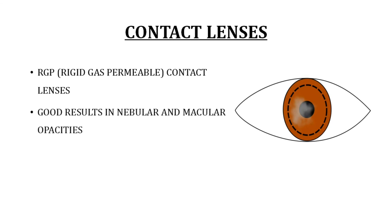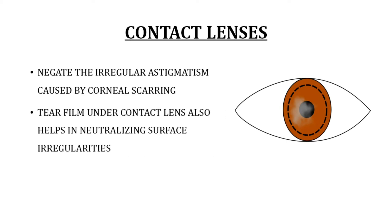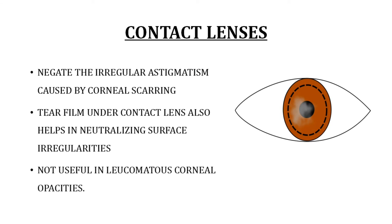A non-surgical optical management option for corneal opacities is to use contact lenses. The most commonly used are RGP — rigid gas permeable — contact lenses, which have shown good visual results in nebular and macular corneal opacities. Contact lenses replace the optically irregular surface of the scarred cornea, negating the irregular astigmatism caused by corneal scarring. The tear film under the contact lens also helps neutralize surface irregularities. However, RGP lenses are not useful in leucomatous corneal opacities.